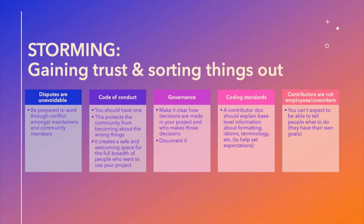Next is governance. A governance doc basically provides rules of engagement around things like decision making and voting for a project. Sometimes users will decide whether or not they want to participate or use your project based on this — especially if one company is controlling a project. Think about this before there's a problem and involve all the stakeholders that might be affected.